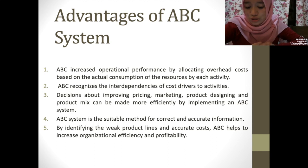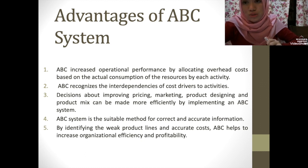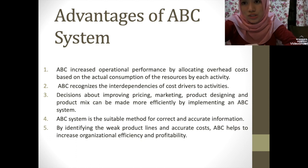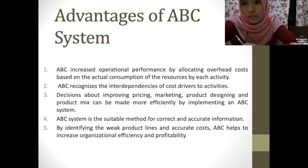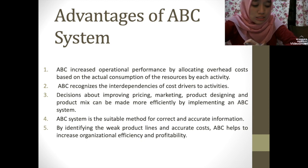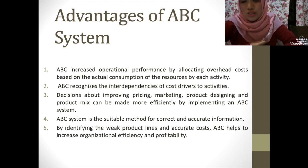For the first point, ABC increases operational performance by allocating overhead cost based on actual consumption of the resource by each activity. The ABC system identifies the real nature of cost behavior and helps to reduce cost by identifying activities which do not add value to the product. Managers can control many fixed cost behaviors by controlling the fixed cost activity — any activity that causes the fixed cost overhead.